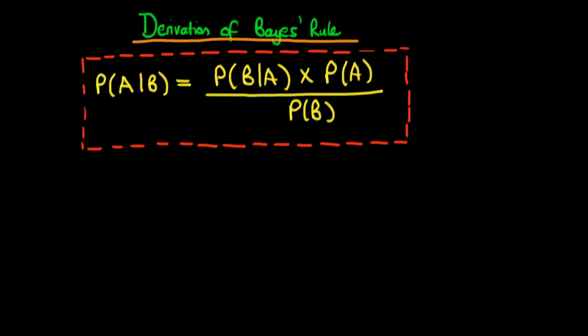In this video I want to go through a very short derivation of Bayes' rule, which I've indicated here in yellow. We've got that the probability of A given B is equal to the probability of B given A times the probability of A on the numerator, all divided through by the probability of B.